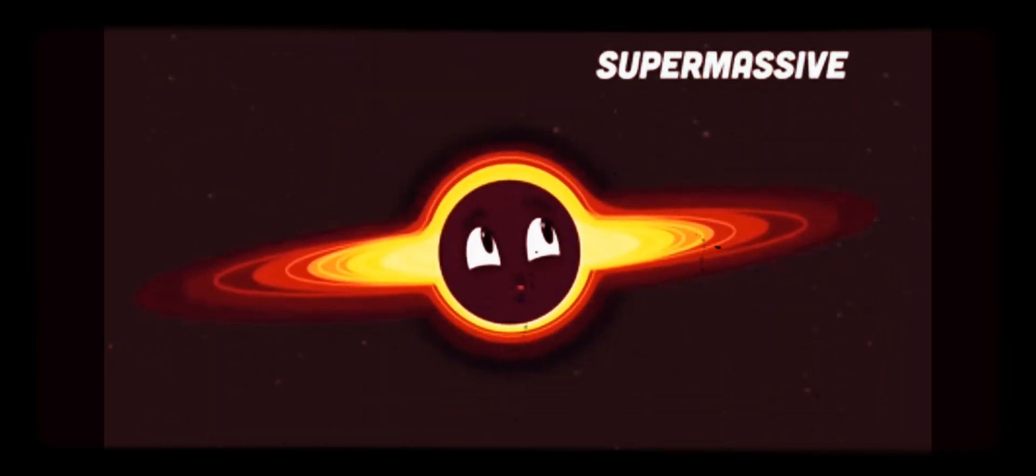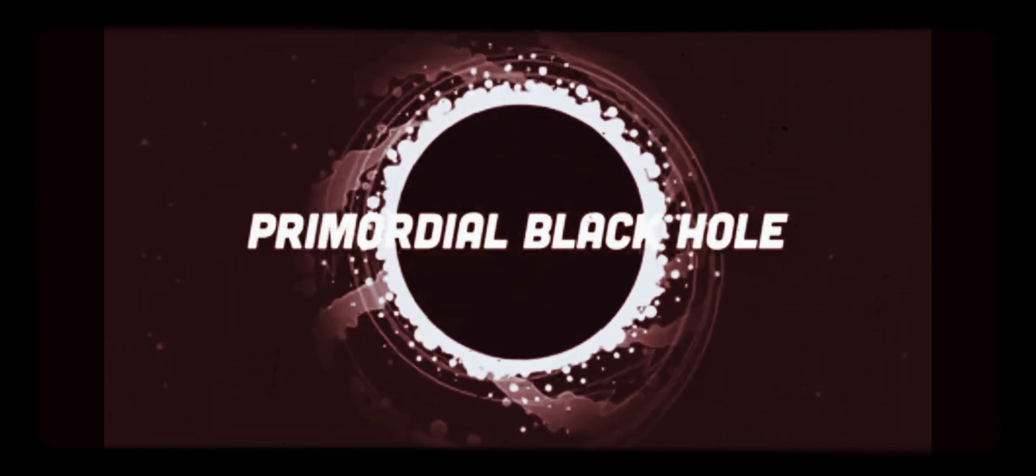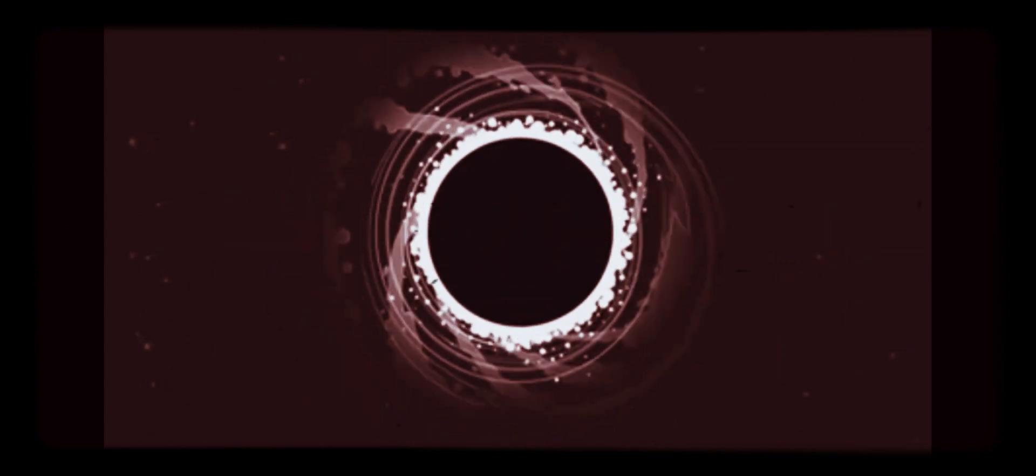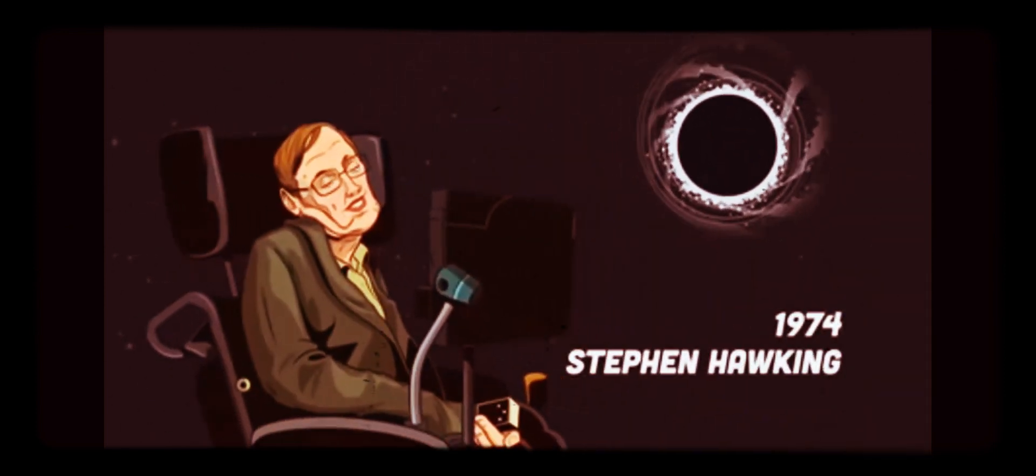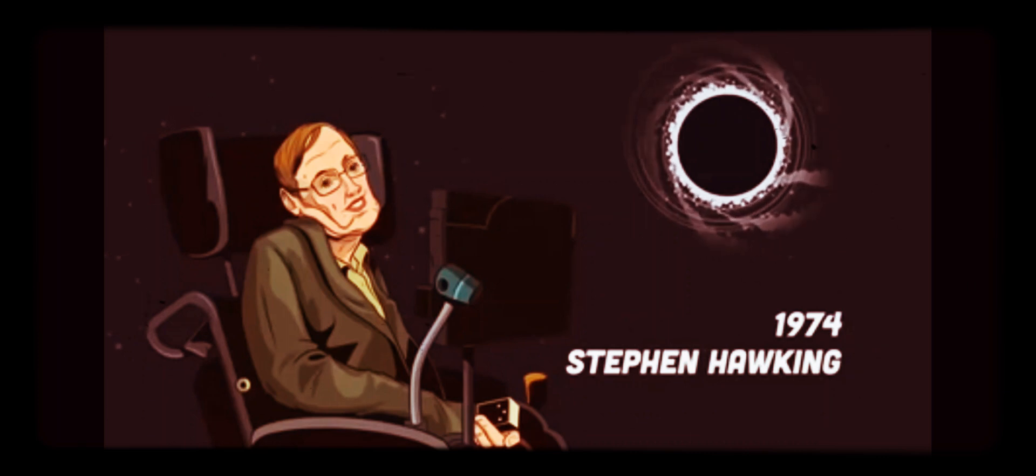There are three types of black holes according to theory: primordial, stellar, and supermassive like me. The primordial's a tiny hypothetical black hole. In 1974, Stephen Hawking theorized its role.